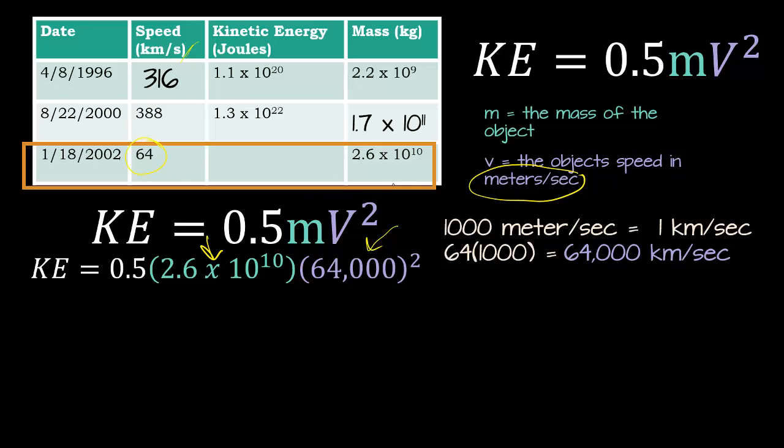The next step I did was multiply. So it turns out that our kinetic energy is 5.3 times 10 to the 19th joules. So that's going to go right up in here. All right, awesome. Now it's your turn to try.